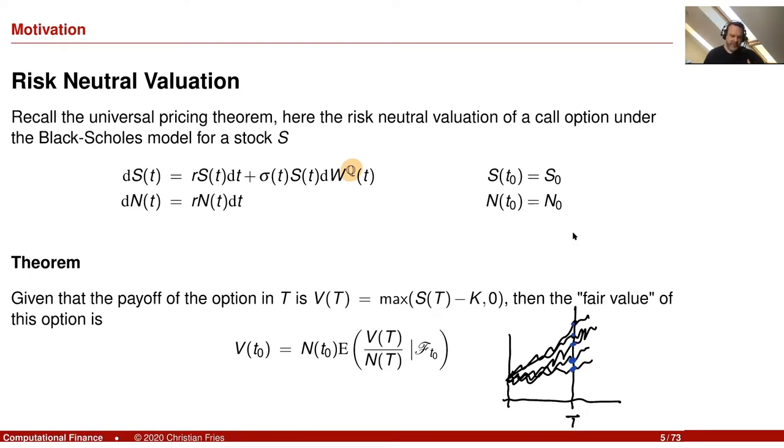And if I pay you now a function of this random variable, the random variable is S, and I pay you at a future point in time a function of this random variable, then the value, the fair value of this payment, is the expectation under the risk neutral measure. So this E here is related to the Q, and actually the Q is related to the fact that here I divide by N. But this is a detail I don't want to stress now. I just want to tell you, okay, we know there is some theorem and this theorem tells us we have to calculate an expectation.